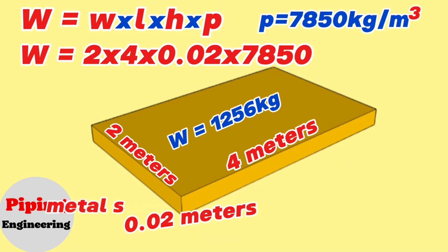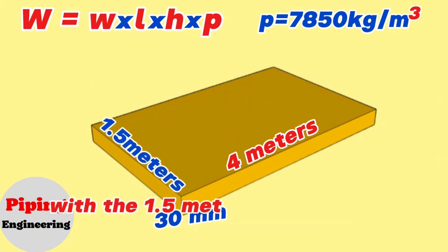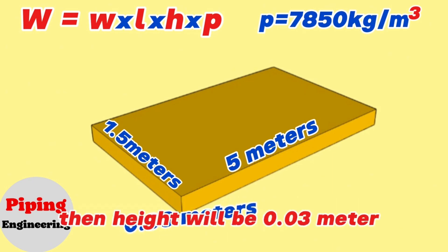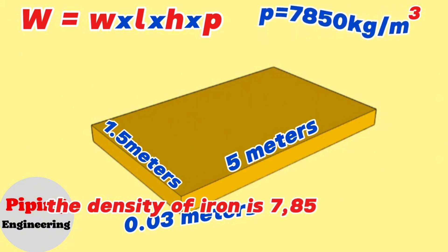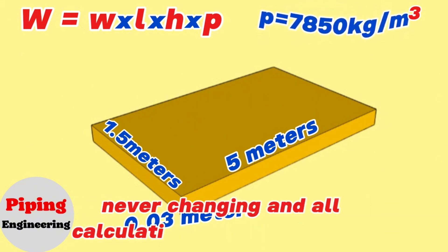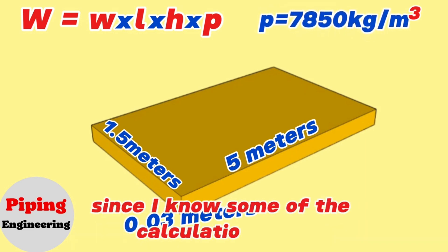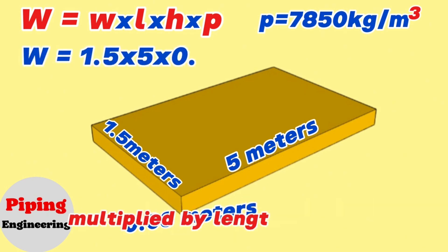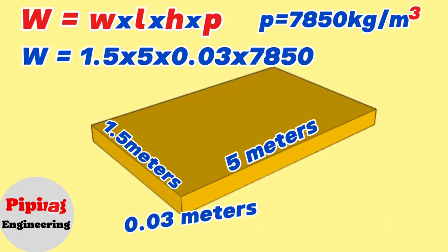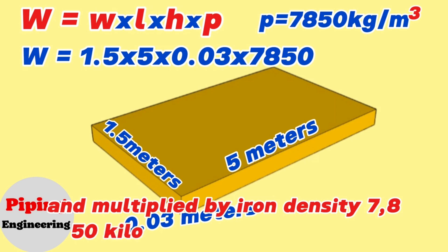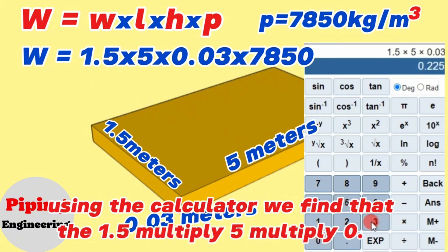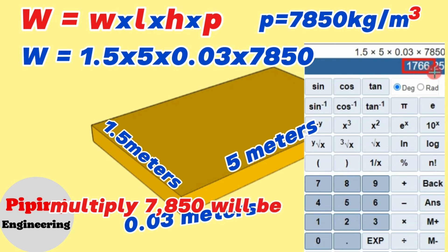Now let's calculate the weight of an iron metal sheet with a wall thickness of 30 millimeters, a width of 1.5 meters, and a length of 5 meters. Converting the height, it will be 0.03 meters. The density of iron is 7,850 kg per cubic meter — constant, never changing, and used in all calculations. Let's write this information into the weight calculation formula: Weight equals width 1.5 meters multiplied by length 5 meters, multiplied by height 0.03 meters, and multiplied by the iron density 7,850 kg per cubic meter. Using the calculator, we find that 1.5 × 5 × 0.03 × 7,850 equals 1,766.